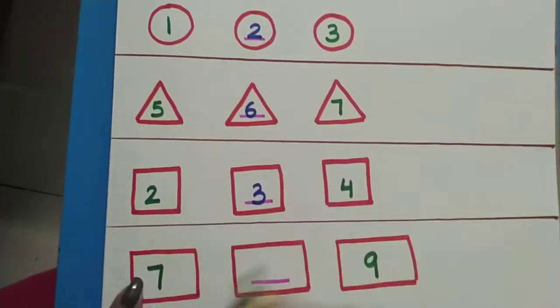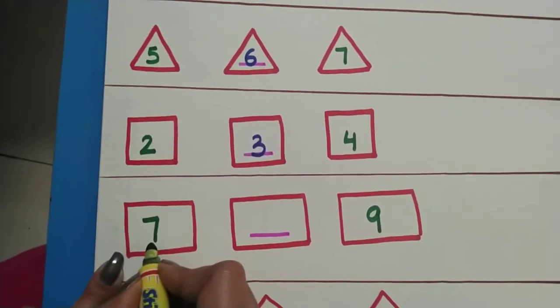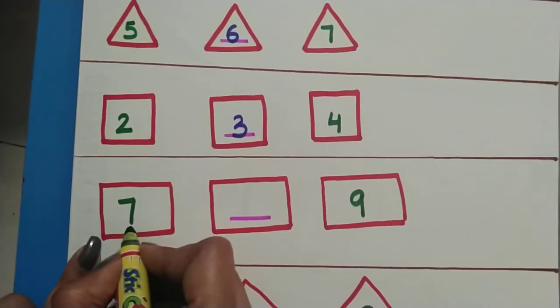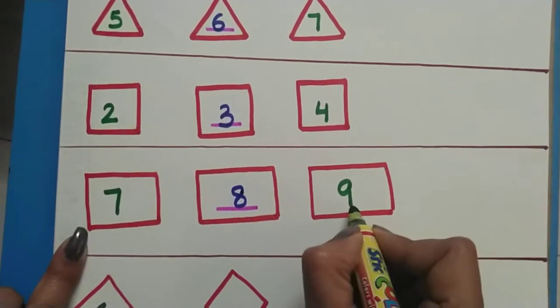Excellent. Now which shape is this? This is a rectangle. And which number is this? Seven. So we will count and we will write. Seven, eight and nine. Excellent.